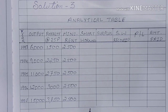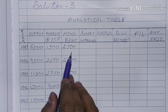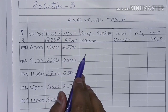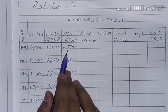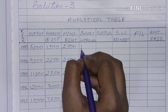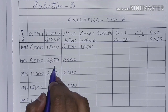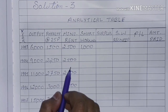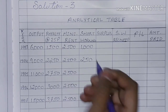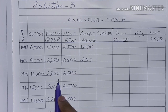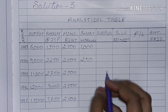All of us have written the minimum rent. Now we have to calculate short working. If the minimum rent is more and the royalty is less, then we will have short working. In this case, the royalty is 1,500 and minimum rent is 2,500, so short working is 1,000. Then in year 2, royalty is 2,250 and minimum rent is 2,500, so short working is 250.